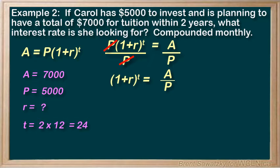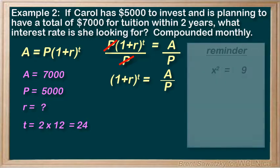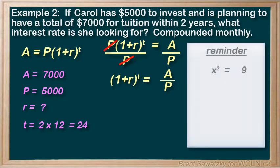Now, we need to get the R by itself. So how do we get rid of the t? Let's get our head into this a little bit. So on the side here, a little reminder. If we were solving for x, and we were told that x squared is 9, how would we get the x by itself? What's the opposite of squaring? Yeah, square rooting. And if we square root both sides to keep them equal, the square root and the squared would cancel out. And we're left with x equals the square root of 9.